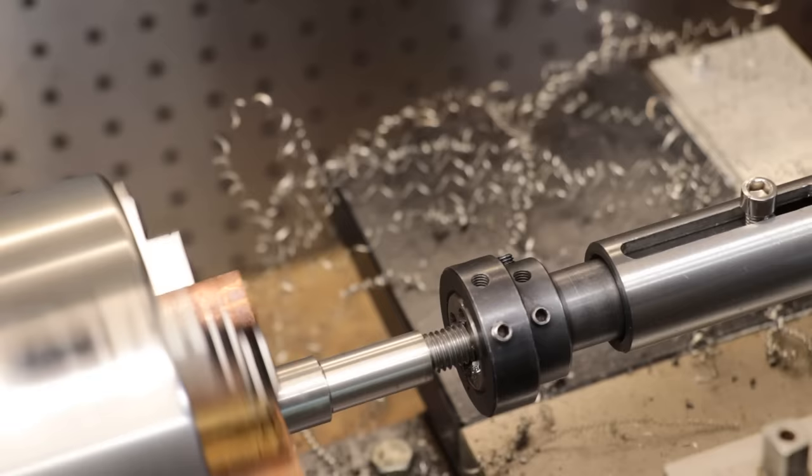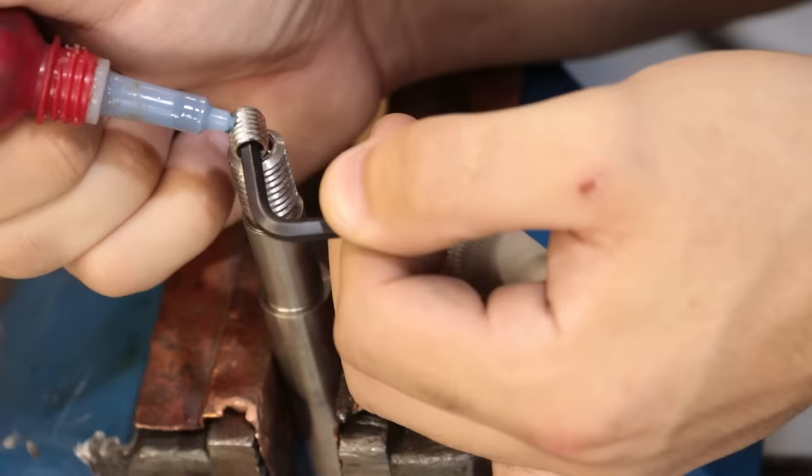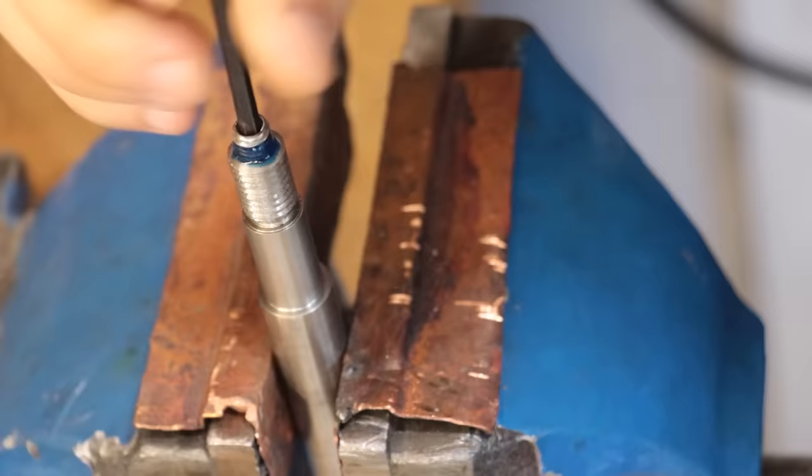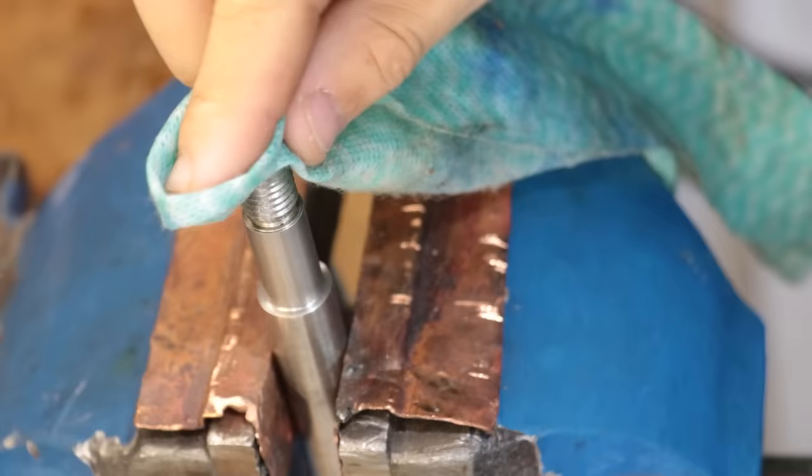Only other difference though is I accidentally made it a little bit too small, so it's M10, not M12. I'll also add a grub screw so I can hold the shaft in place as I tighten the locking nuts.